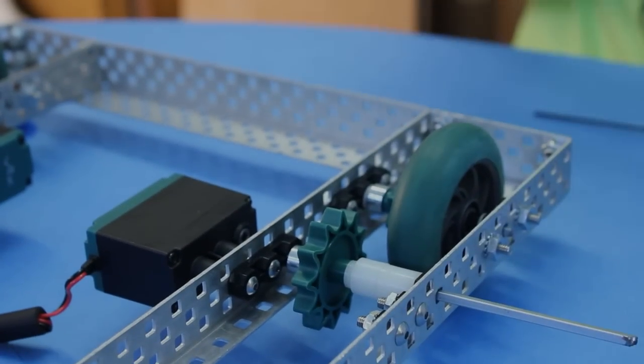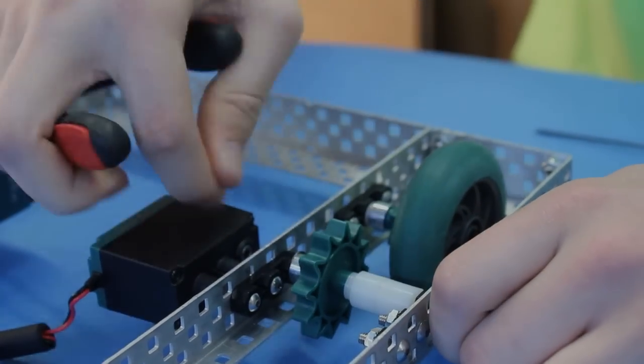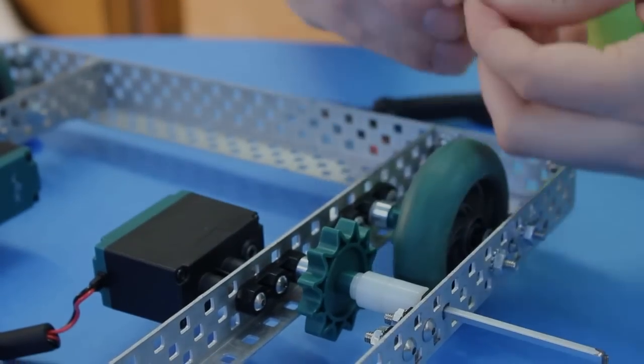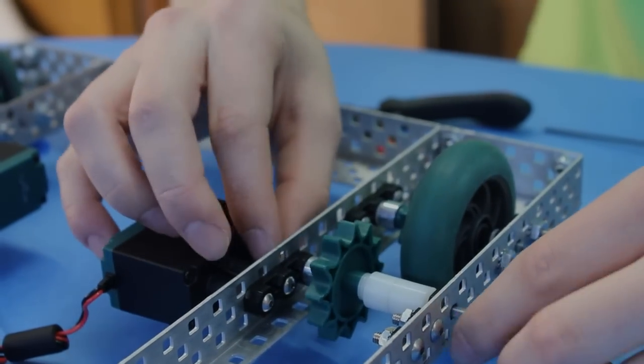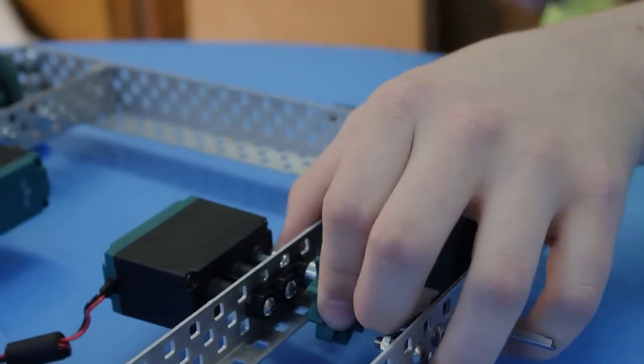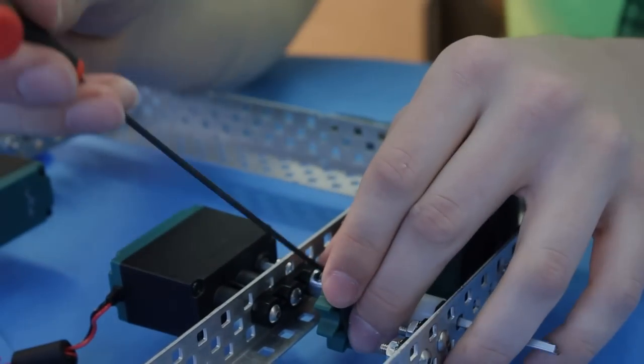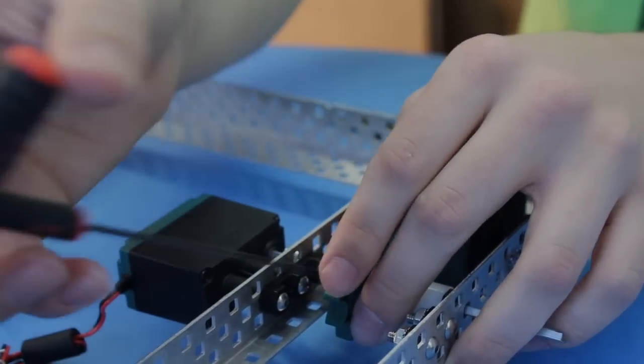And then you want to put another lock collar on, and this part is really similar to the rear wheel that we just did. And then you want to put another washer and lock collar on the other side to make sure it doesn't pull out of the motor. Tighten both of those up, and you're done with one side of the gear train. And then you want to put some Omnis on the front.